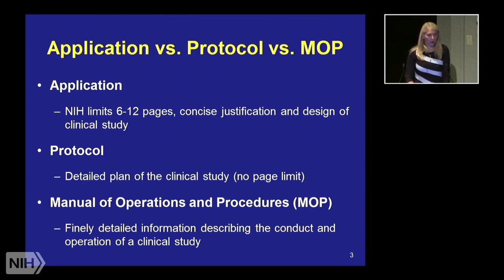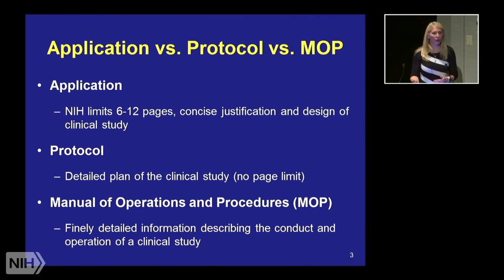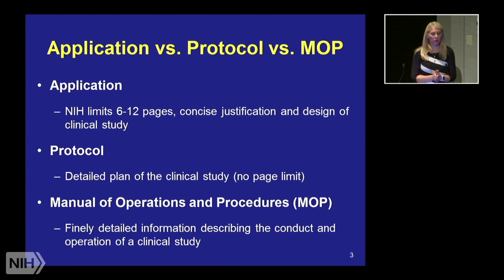The difference between a protocol and a manual of operations and procedures — what we sometimes call the MOP — is that the MOP has even more detail. For example, if you're collecting blood samples in your trial, you may just describe in the protocol what types of tubes are used and that they'll be processed and shipped. Whereas in your MOP, you'll detail specifically how much blood, how many of each tube, how each one is processed, if it needs to be spun in a centrifuge and for how long, if it needs to be stored at specific temperatures, as well as the detailed process for shipping specimens. It's the level of detail that distinguishes these different documents.